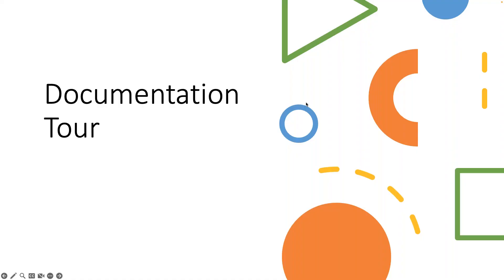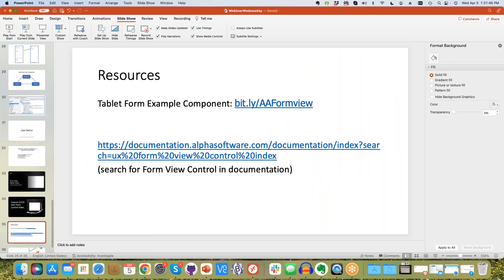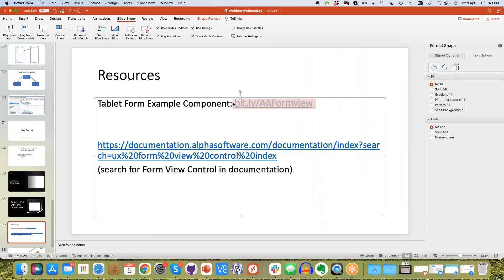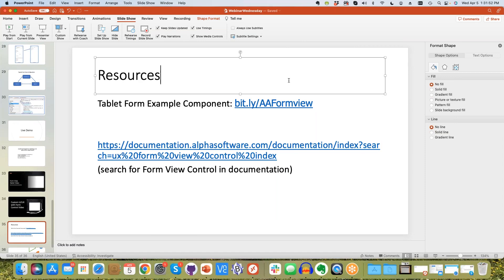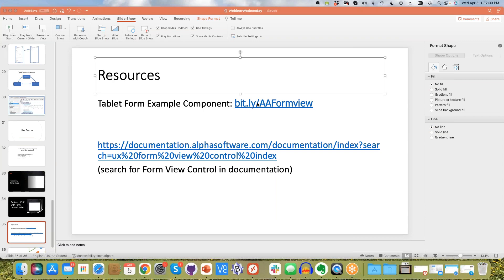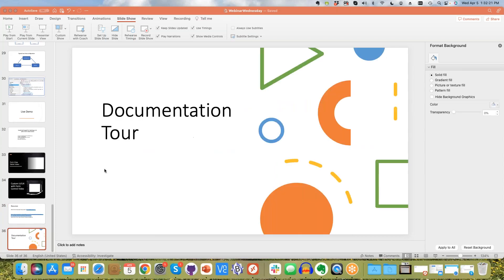The link is a bit.ly link — bit.ly/AAFormView — with 'AA' and 'F' capitalized. I'm going to paste that link into the chat window. It will download as a zip file. You unzip it, take that UX component, place it into your project, and use it from there.